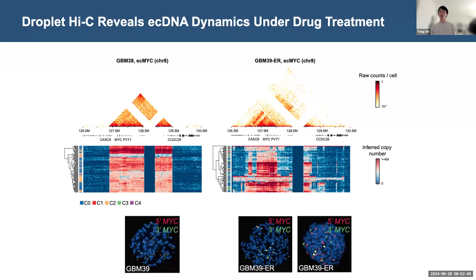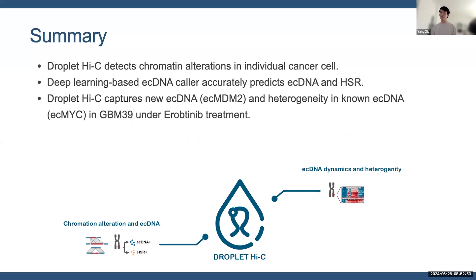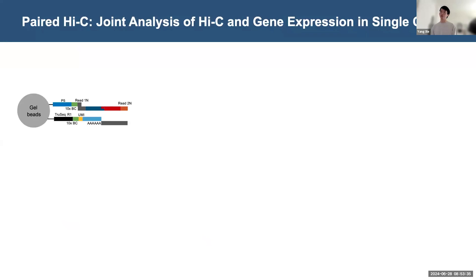I hope I have convinced you that Droplet Hi-C has unique power in identifying chromatin alterations in single cancer cells. With the development of the deep learning-based ecDNA classifier, we can accurately separate two similar structural variations, and the combination of sequencing tools and prediction models allows us to probe the dynamics of ecDNA in drug treatment systems. The next question is how variations in ecDNA structure relate to gene regulation. The best way to answer this requires capturing both chromatin structure and RNA information in the same single cells. We further extended Droplet Hi-C to the 10X Multiome reaction kit to enable joint analysis of Hi-C along with transcriptome information. We call this method Paired Hi-C.